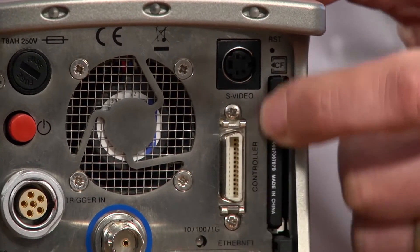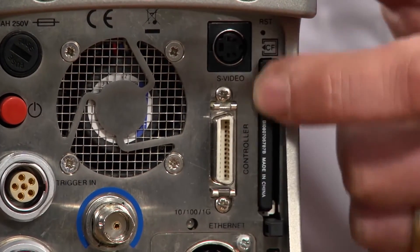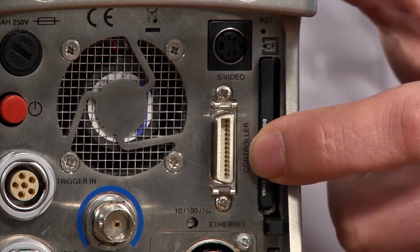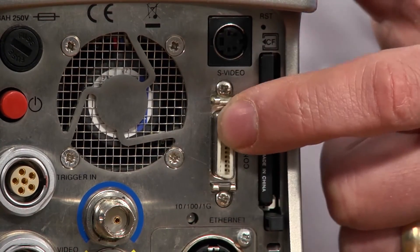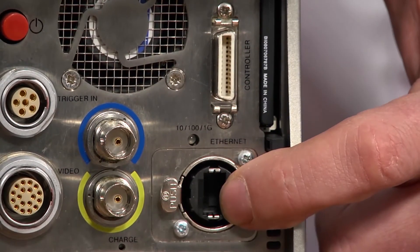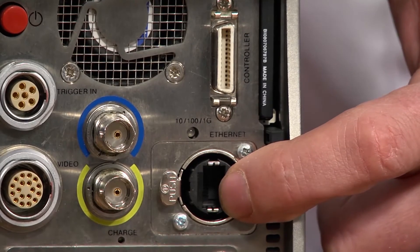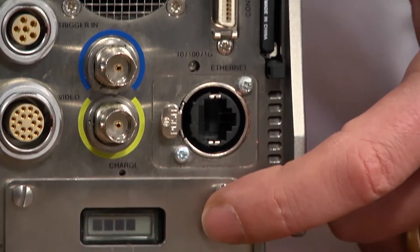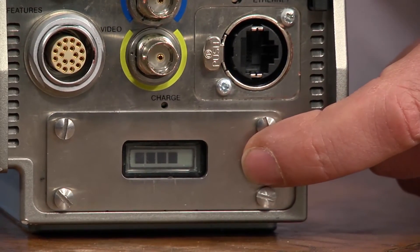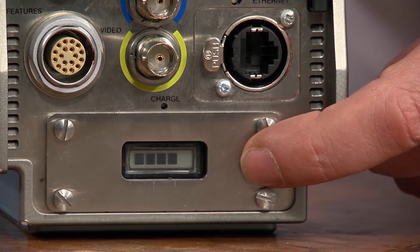There's the compact flash card slot so you can save your video onto CF card, there's the connector for the CDU, there's an Ethernet connector so you can connect your camera to a PC or laptop and there's a door so you can gain access to the battery compartment to remove and replace your battery if you need to.